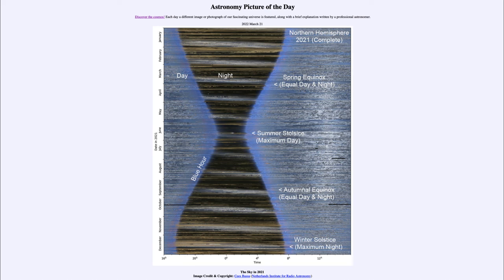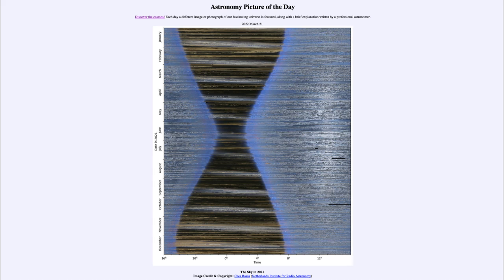Here we get a full view of the sky taken over the course of the entire year of 2021, with one image taken every 15 minutes and then put together to give us the image we see today. That was our Astronomy Picture of the Day for March 21st of 2022, titled 'The Sky in 2021.'